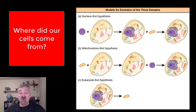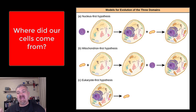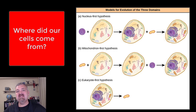So this is the endosymbiotic theory and the different theories for where more complex cells came from over time. It doesn't talk about the origins of life in the beginning, but it shows how cells became more and more complex over time. Hope this helps. Have a wonderful day. Be blessed.